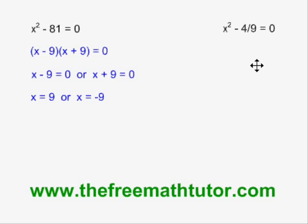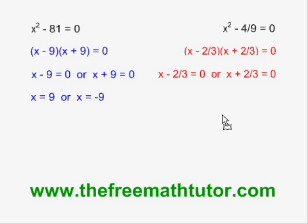On the right, applying difference of squares, I get x minus 2 thirds and x plus 2 thirds as my factors. I do the split, make each of them equal to 0, and isolate the x. I get x equals 2 thirds or x equals negative 2 thirds as my roots, and therefore the roots or x-intercepts of this quadratic equation are 2 thirds and negative 2 thirds. This is how we use the difference of squares factoring method to solve a quadratic equation.